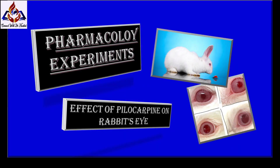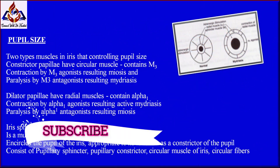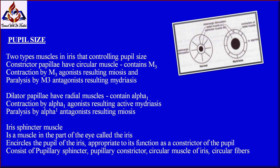Our topic is the effect of pilocarpine on rabbit's eye. There are two types of muscles in the iris that control pupil size: constrictor papillae and dilator papillae. Constrictor papillae have circular muscles that contain M3 receptors; contraction by M3 agonist results in miosis, and paralysis by M3 antagonist results in mydriasis. The dilator papillae have radial muscles that contain alpha-1 receptors; contraction by alpha-1 agonist results in active mydriasis, and paralysis by alpha-1 antagonist results in miosis.